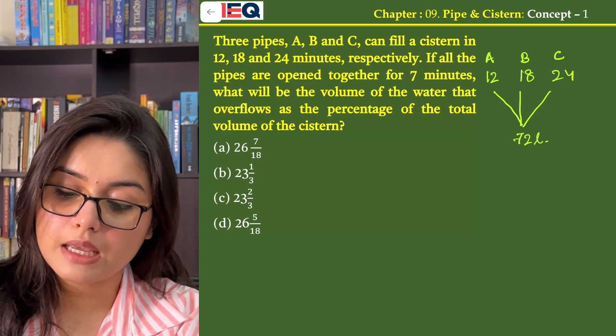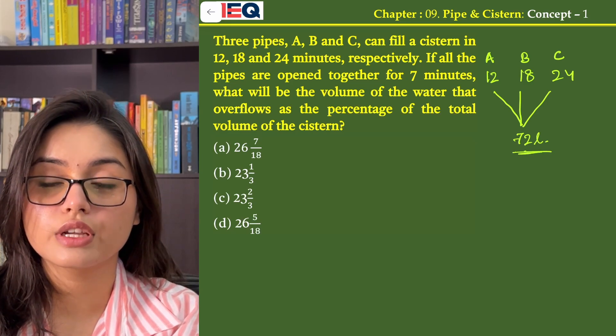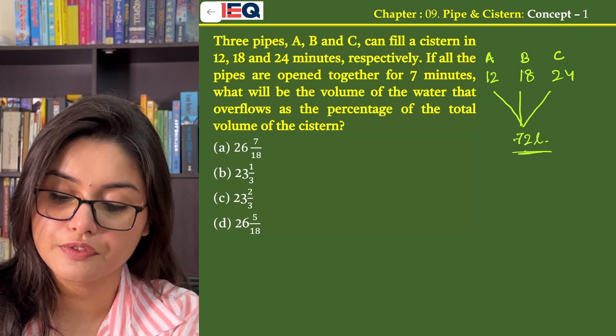Now, pipe A fills a cistern of 72 litres in 12 minutes. So in 1 minute, how much will it fill? It will fill 6 litres.